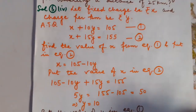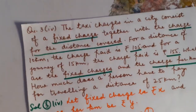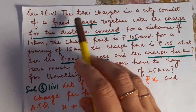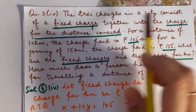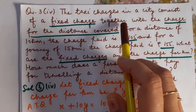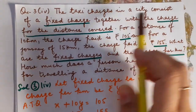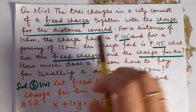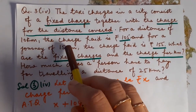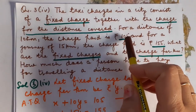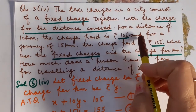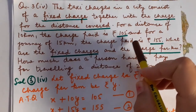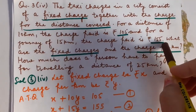Now let us switch to the next question. This is question number 3, part number 4. The taxi charges in a city consist of a fixed charge together with the charge for the distance covered. For a distance of 10 km, the charge paid is Rs. 105, and for a journey of 15 km, the charge paid is Rs. 155.